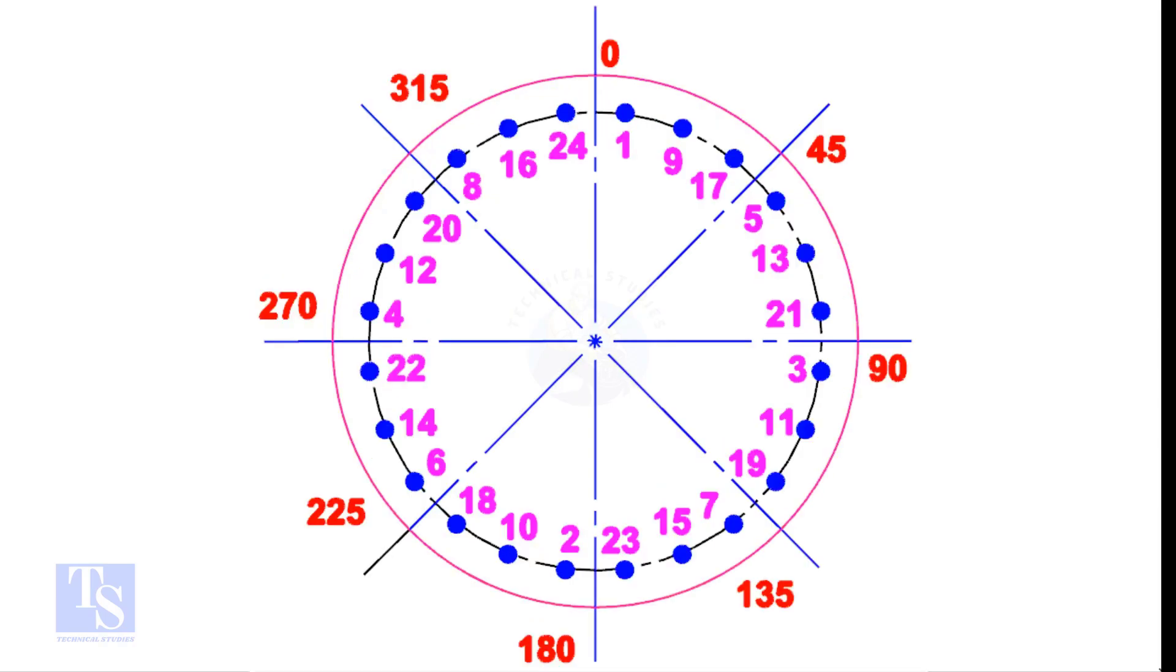For larger flanges, divide the bolts into 8 equal groups. Apply the same method. The difference between the two nearest holes will be 8.